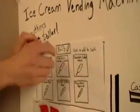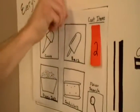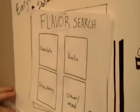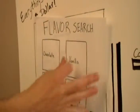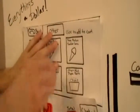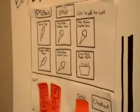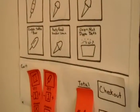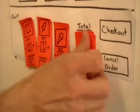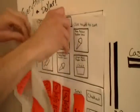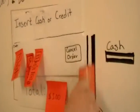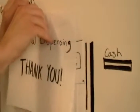And then I'll go back and click the flavor search. Let's click other/mix. And then I'll have a Rocky Road sundae cone. And now I'll check out the Rocky Road. And then I'll swipe my card. Yay!